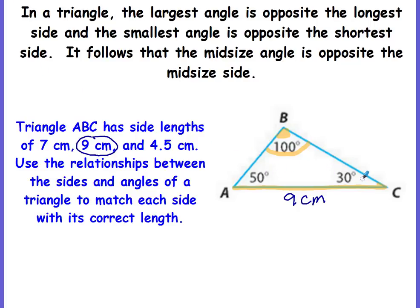Now let's go for the smallest. The 30 degrees is the smallest angle, so C is your smallest angle. We want the side that is opposite C — the side that does not touch C. AC touches C, BC touches C, but AB does not. So AB is the side opposite angle C. Since angle C is the smallest angle at 30 degrees, we want the shortest side, which is the 4.5 cm.